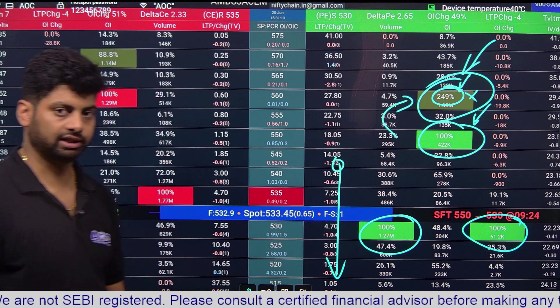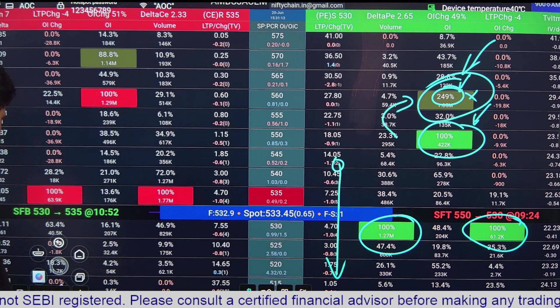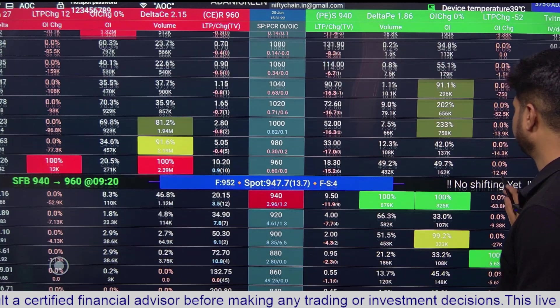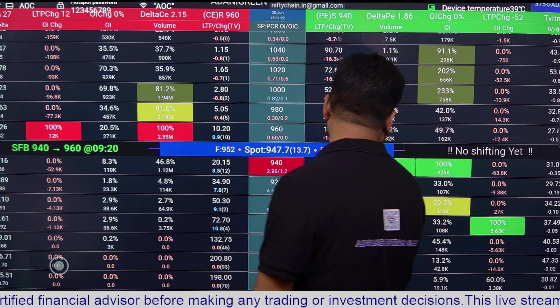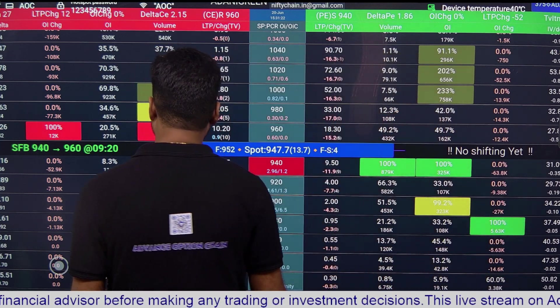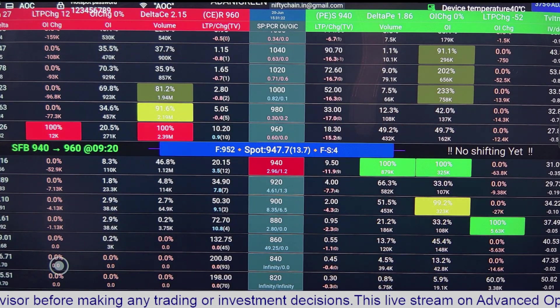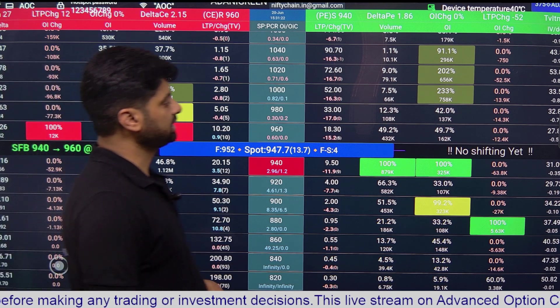In this case we have 530 as our support because of volume and OI change. Another example, 940 is our support because of volume and OI. Similarly 960 is our resistance because of volume and OI change.